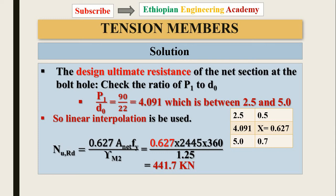First, check the ratio of p1 to the hole diameter: p1 is 90 mm and hole diameter is 22 mm, giving a ratio of 4.091, which is between 2.5 and 5. According to EN 1993-1-1 (EC3 1995), when the ratio is between 2.5 and 5, linear interpolation is used. For ratio 2.5 the factor is 0.5, for ratio 5 it is 0.7. For ratio 4.091, the interpolated value is calculated using a scientific calculator.